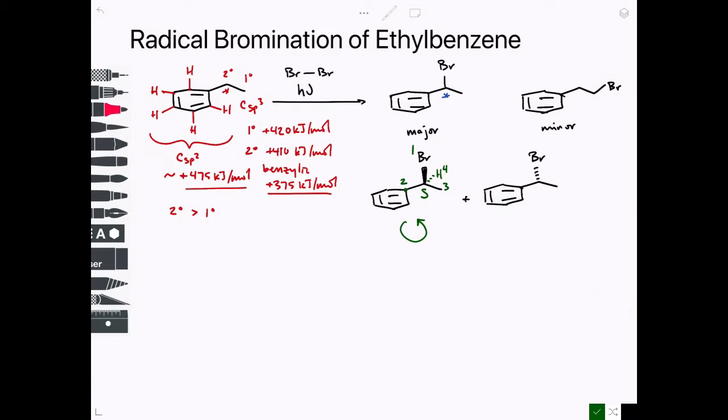The mirror image is therefore R. So the priorities still remain the same. You have one, two, three. But the lowest priority group is now coming out towards you. So even though you initially go counterclockwise, you have to reverse it, and it ends up being R.